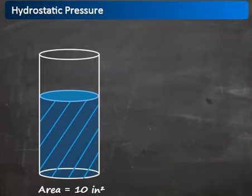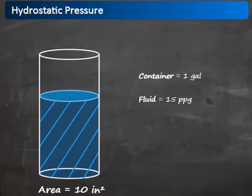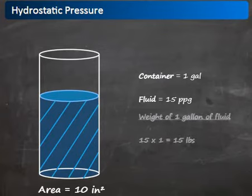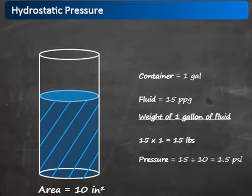If the 10 pounds per gallon fluid is replaced by a more dense fluid of 15 pounds per gallon, the weight of one gallon of this fluid would be 15 pounds. The pressure exerted on 10 square inches would be 15 divided by 10, which equals 1.5 psi.